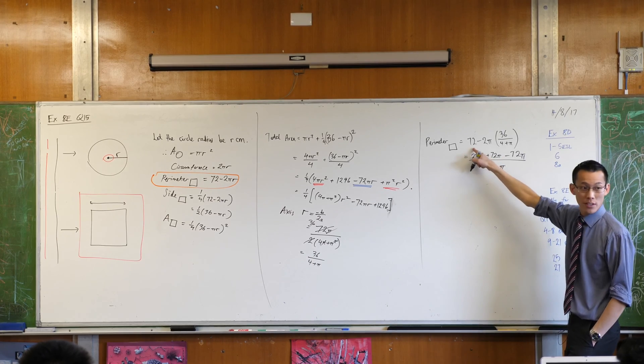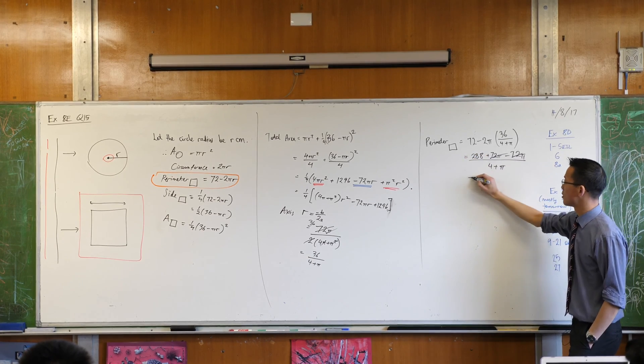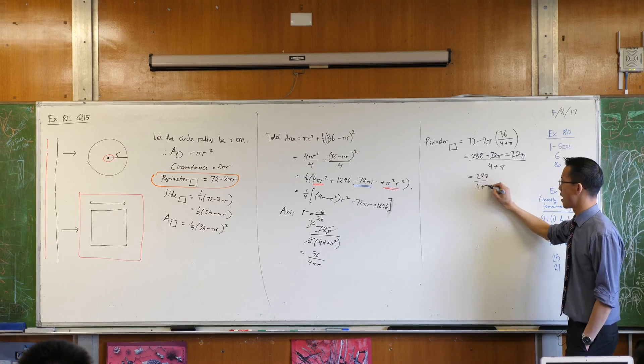Yeah, you saw where this came from. It came from the 72. Cancel, cancel and there is the required perimeter.